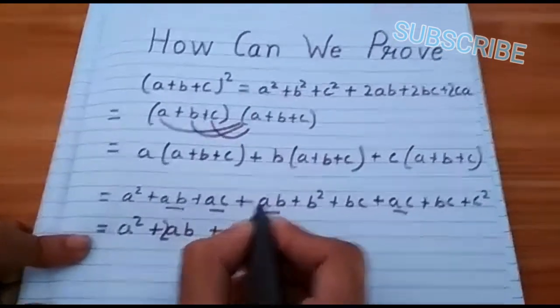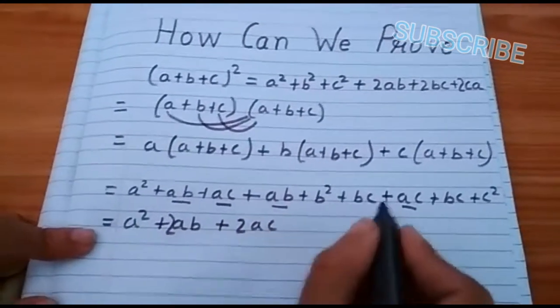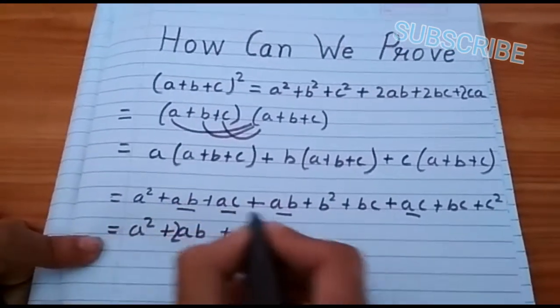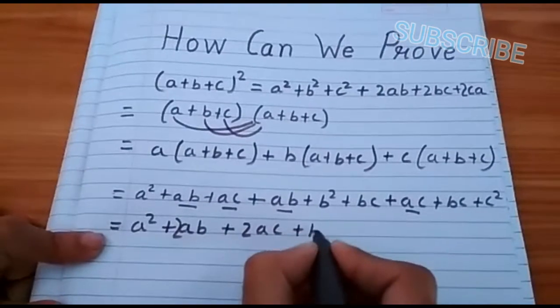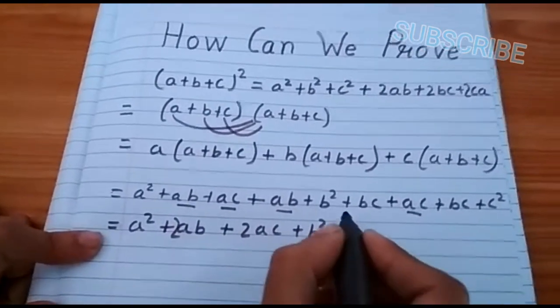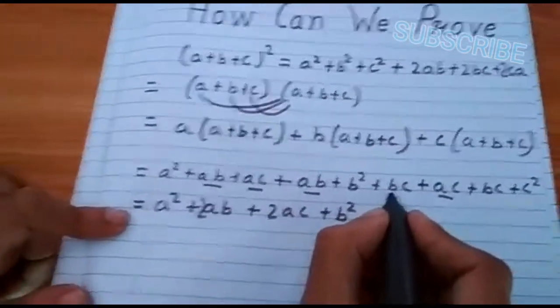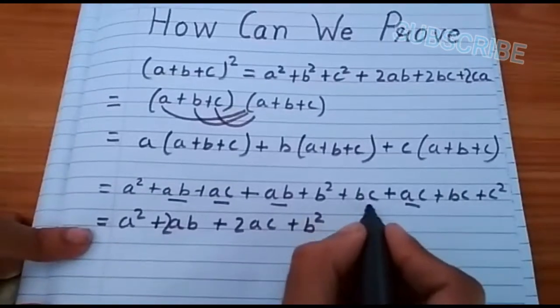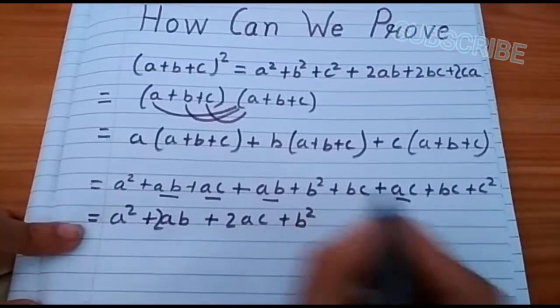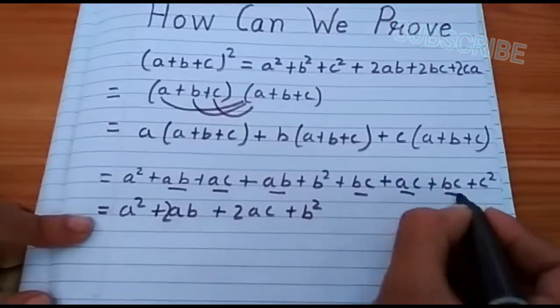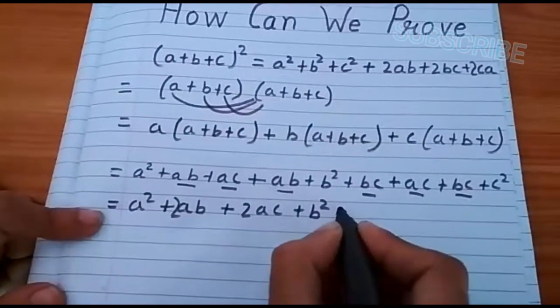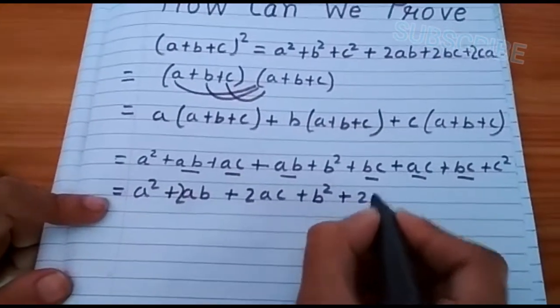Then we see how many b² is there. So, there is only one b². Then we write b². Now we see how many bc is there. There is two bc here and here. Let us sum this. 2bc.